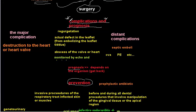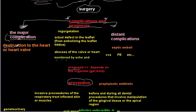We divide the complications of infective endocarditis into two major groups. The first group is major complications due to the direct effect of infective endocarditis — destruction to the heart, the heart valves, or both — caused by the vegetation. This is a major complication of infective endocarditis.